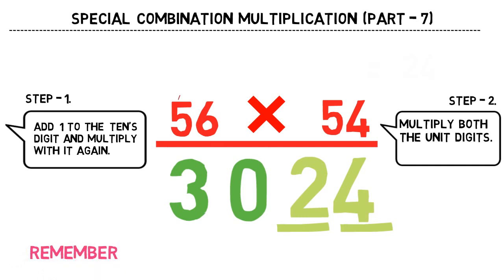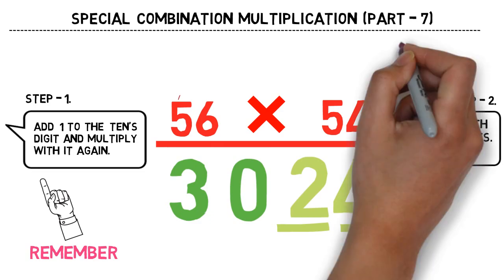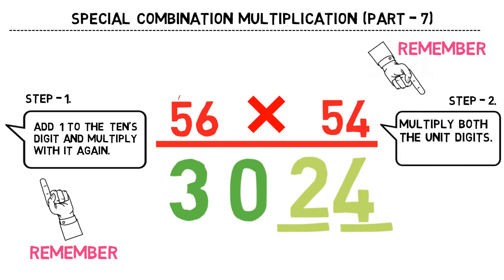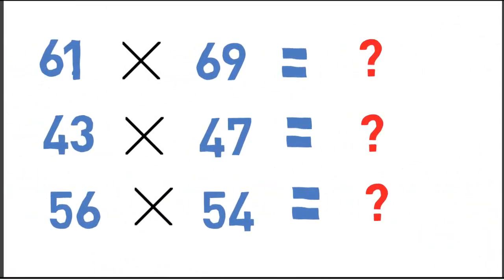Remember once again, the step 1 is addition and then multiplication, step 2 is direct multiplication. Now we have got the answer for the third one, 56 into 54 which is 3024.